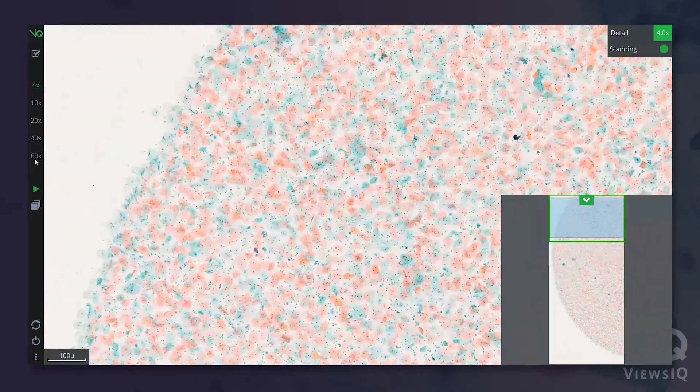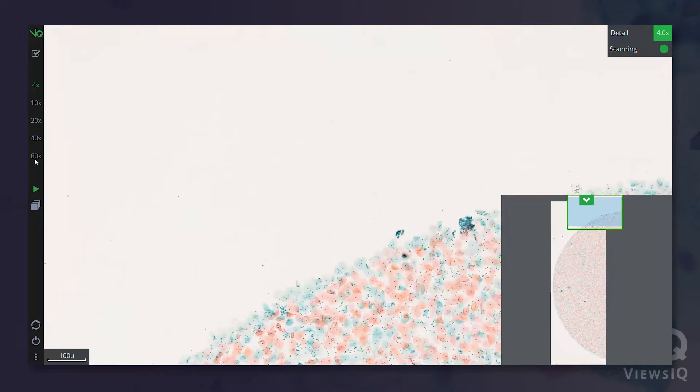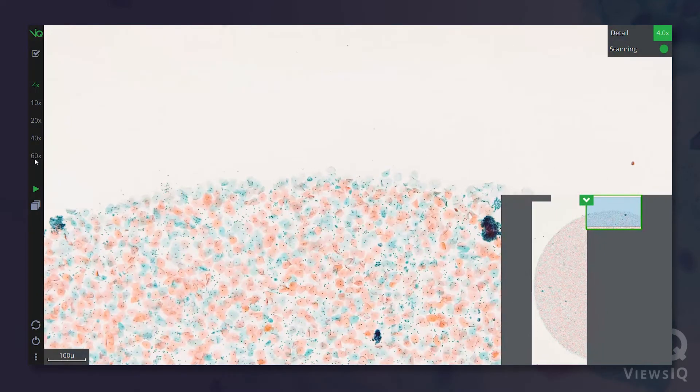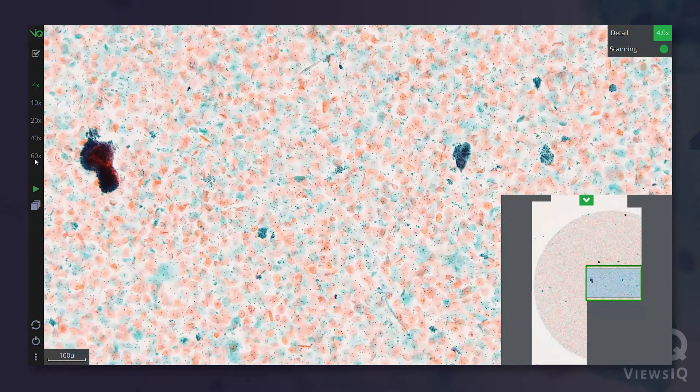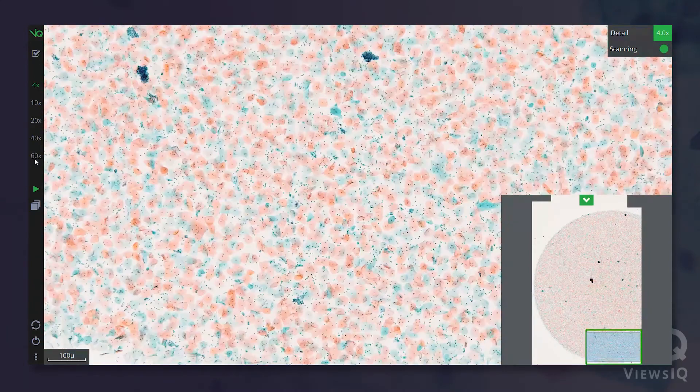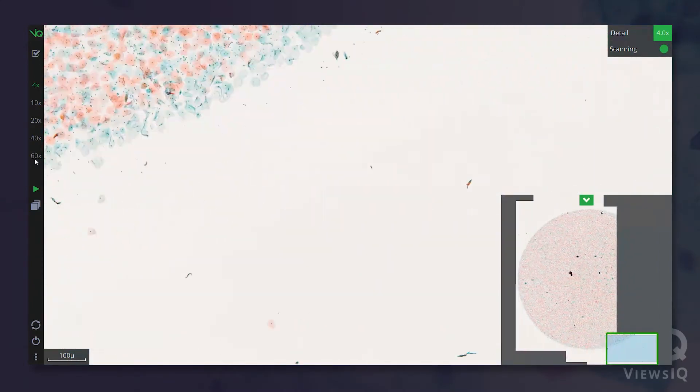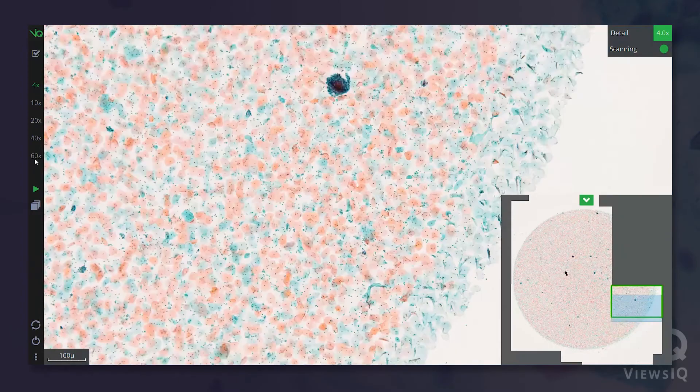As you move the slide around, you can see Panoptic records in real-time what you've seen. Up, down, left, right, doesn't matter. Panoptic simply incorporates new areas as you view them, just as you would survey a slide normally.